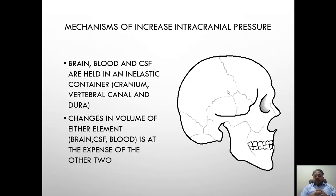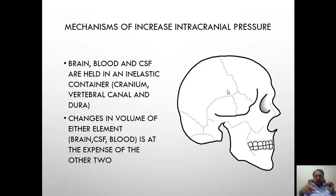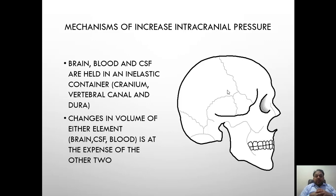Hydrocephalus causes increased intracranial pressure. The mechanism is as follows: brain, blood, and CSF are held in an inelastic container — the bony cranial cavity. So if there is a change in the volume of one element, there will be a decrease in the volume of the other two, because the brain cannot expand due to this inelastic container. So if there is increased CSF as in hydrocephalus, it will lead to a decrease in brain parenchyma volume and also a decrease in blood volume of the brain.